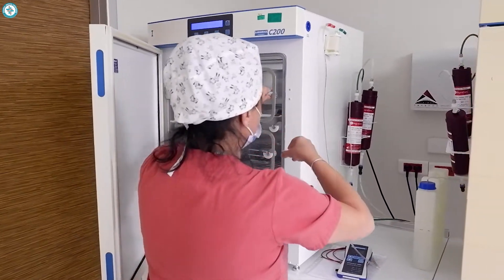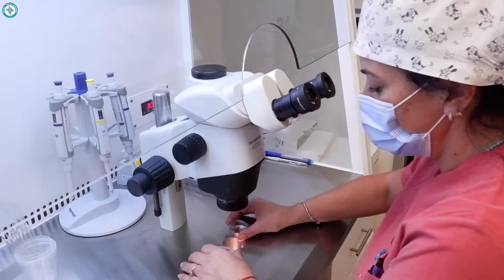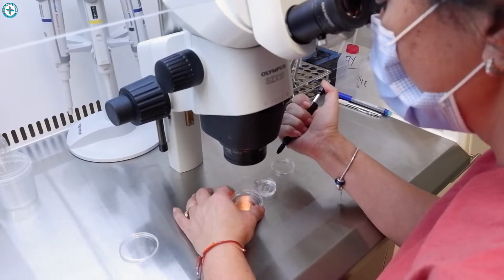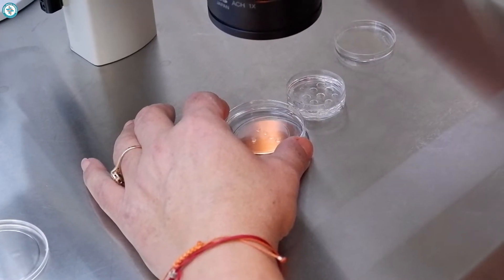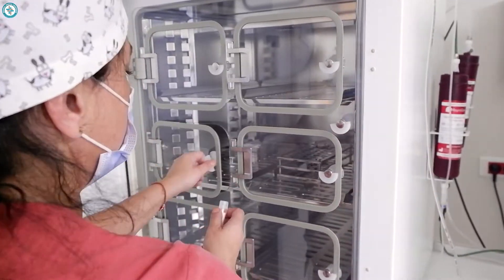For ICSI, the biologist takes the eggs from an incubator and places them in a lab dish. Next, she adds the sperm.